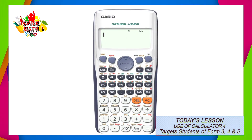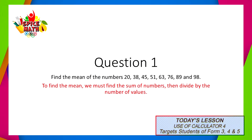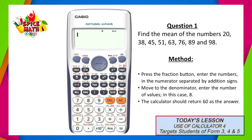In today's lesson, we'll be looking at four questions. The first question: find the mean of the numbers 20, 38, 45, 51, 63, 76, 89, and 98. In order to find the mean of this set of numbers, we must first find the sum of these numbers, then divide this sum by the number of values in the set. The easiest way to do this would be to use the fraction function on your calculator.